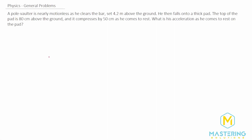Welcome to Mastering Solutions. In this problem, a pole vaulter is nearly motionless as he clears the bar set 4.2 meters above the ground. He then falls onto a thick pad, and the top of the pad is 80 centimeters above the ground. It compresses by 50 centimeters as he comes to rest. What is his acceleration as he comes to rest on the pad?